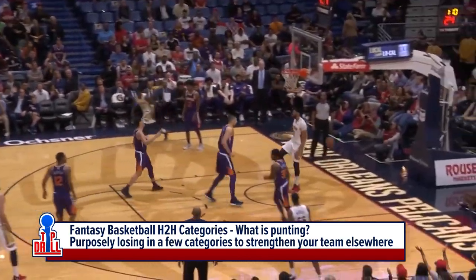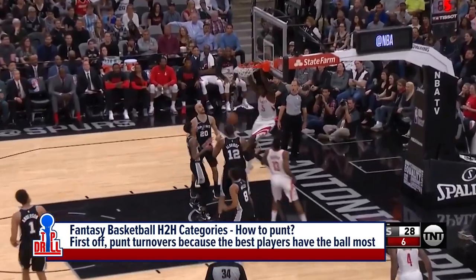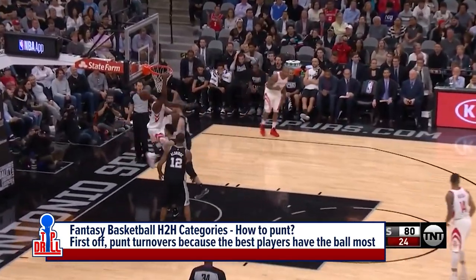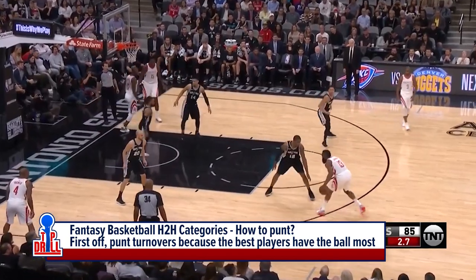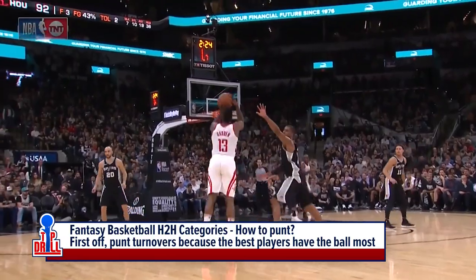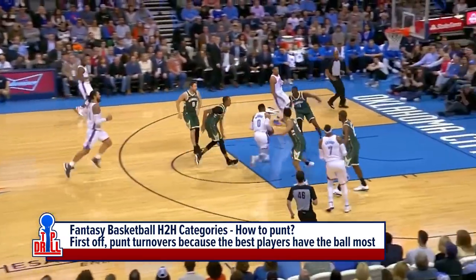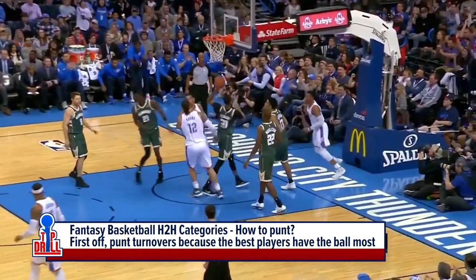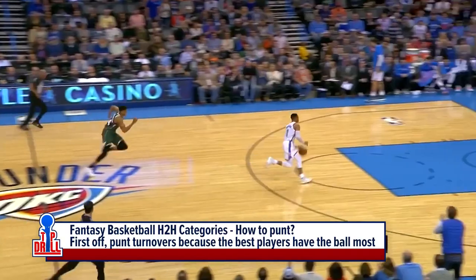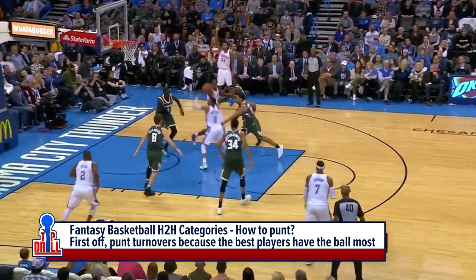So let's start with punting. When I go into my draft, do I already have an idea of which categories I want to punt? I'll say right off the bat: turnovers. The best players have the ball in their hands the most and they're going to turn the ball over the most. James Harden, Russell Westbrook, LeBron James — they turn the ball over the most because they have the ball in their hands the most, but they're also the best players in the NBA. So turnovers is the one category where, regardless, I'm always punting.